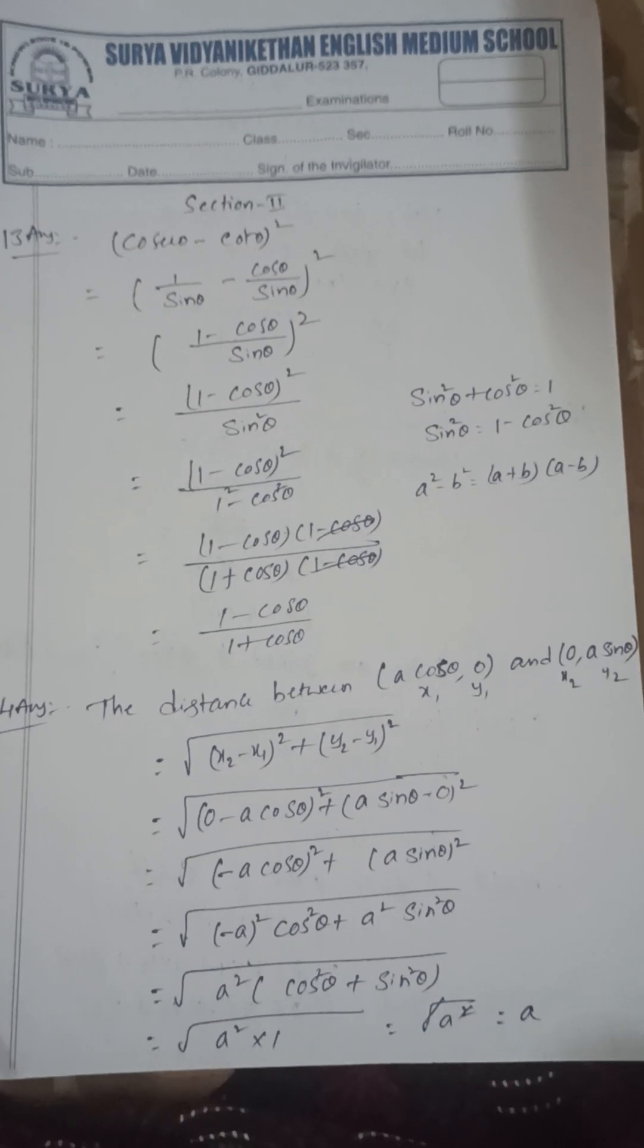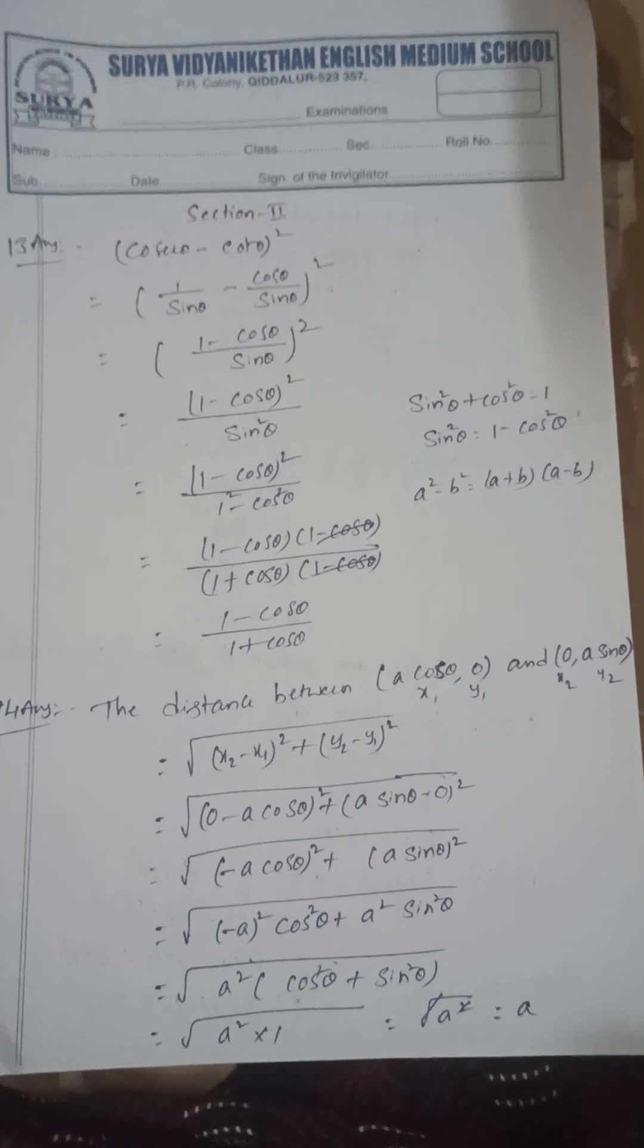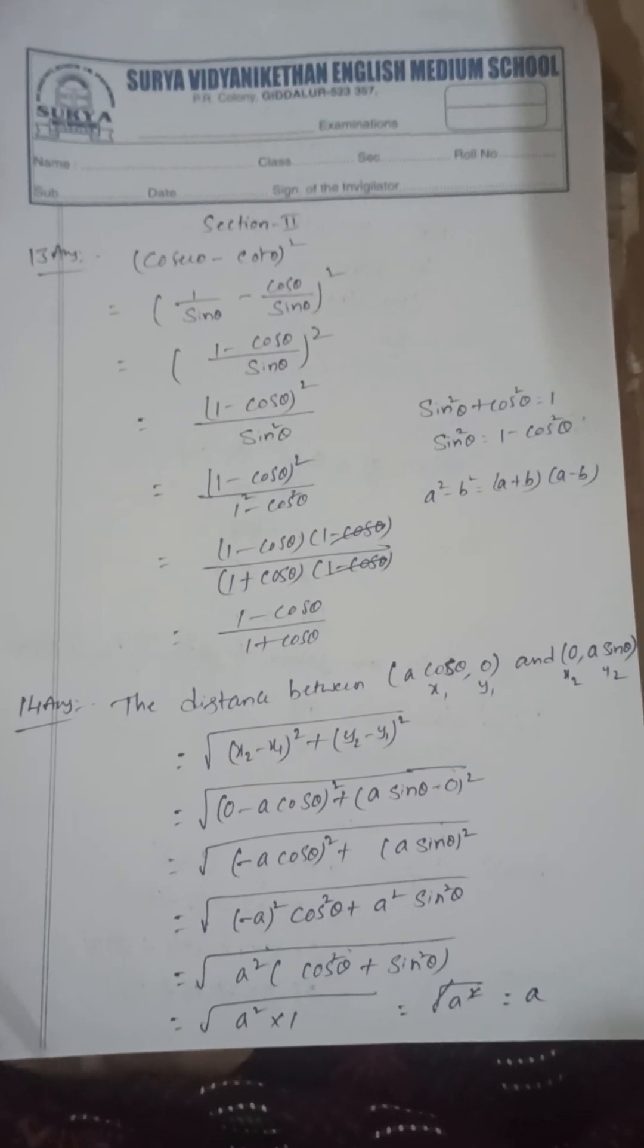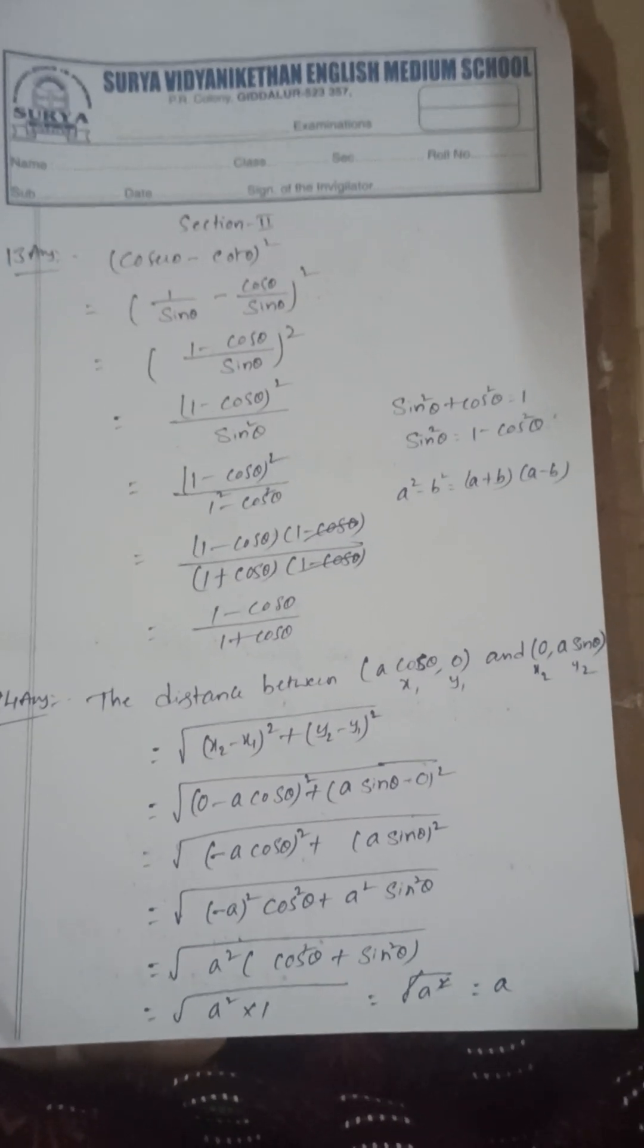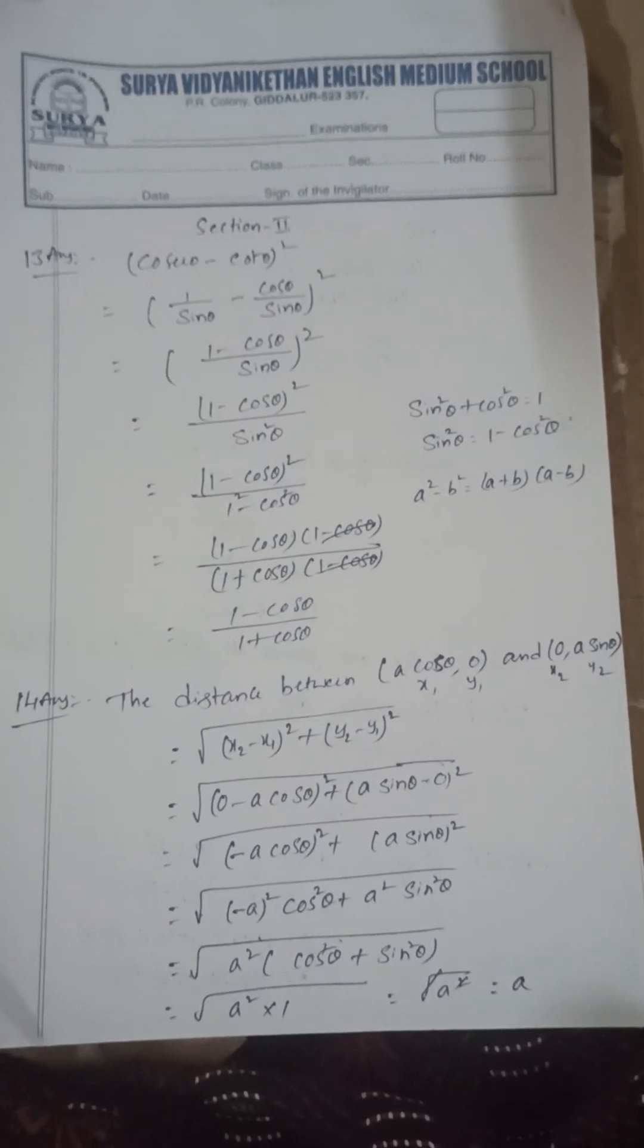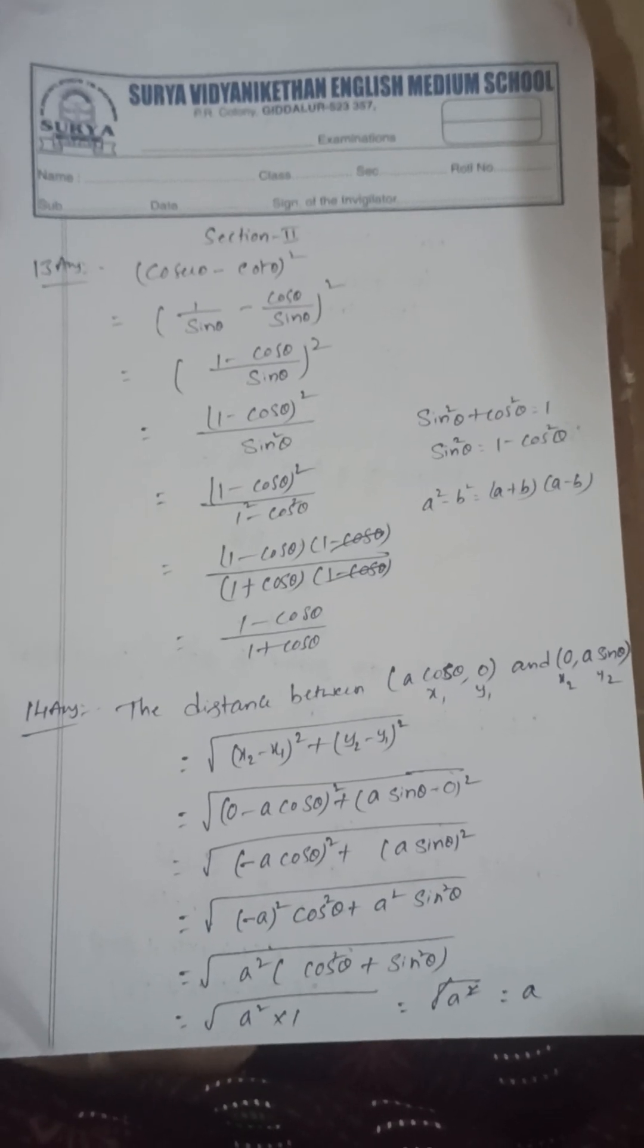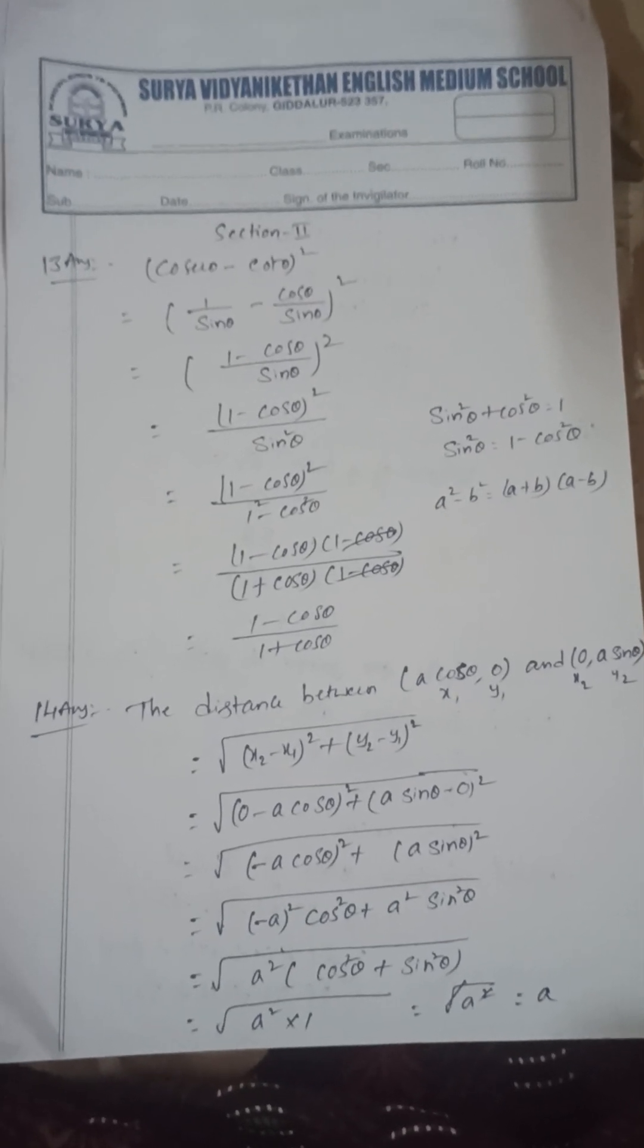Section 3, 13th question: cosecant theta minus cot theta whole square in terms of cos. So here trigonometric identity sine square theta plus cos square theta is equal to one. You can use this identity, so finally you can get the answer 1 minus cos theta by 1 plus cos theta. Next, the distance between a cos theta comma 0 and 0 comma a sine theta, its value is a.